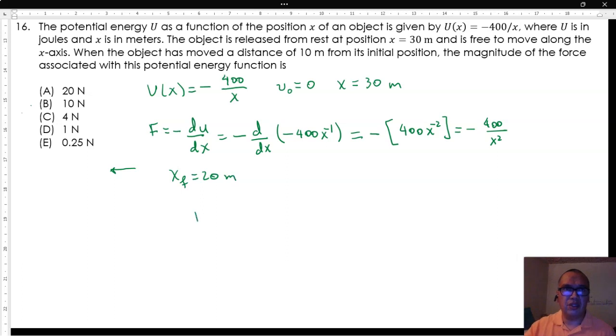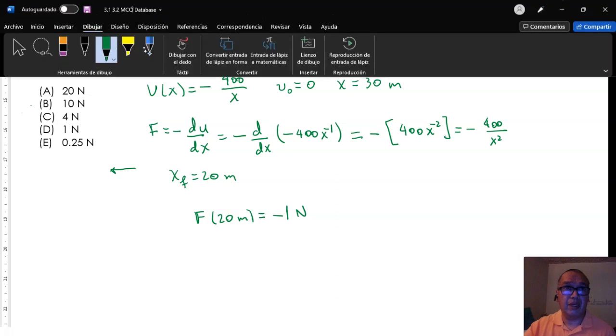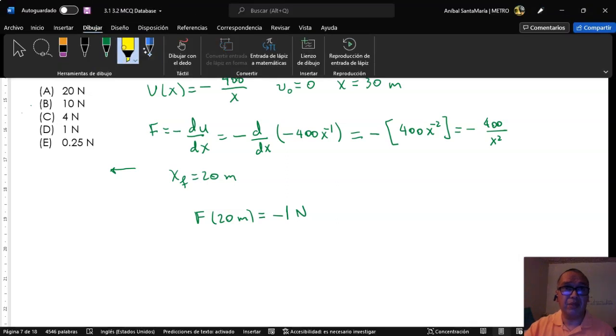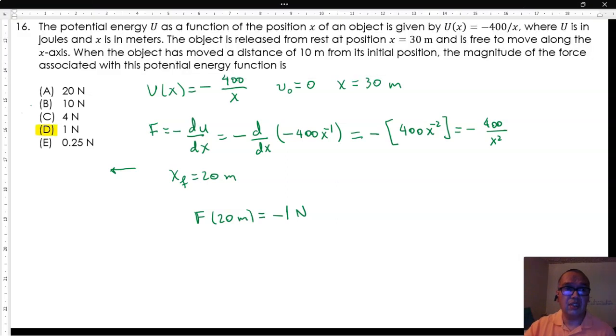Evaluating this function at x equals 20 gives us a value of 1 newton in magnitude, albeit in the negative direction. Since they only ask about the magnitude, the proper answer is option d.